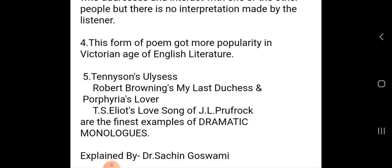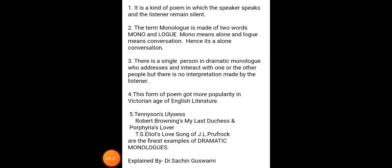Let's talk about some famous dramatic monologues in English literature. Tennyson's 'Ulysses' by Lord Alfred Tennyson — a representative poet of the Victorian age — is considered one of the most famous dramatic monologues. Ulysses was the king of Ithaca in Greek mythology and one of the main heroes of the Trojan War, which was the greatest war in Greek history, fought because of Helen.